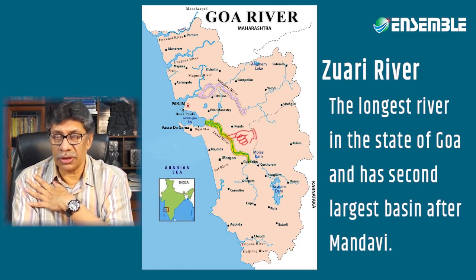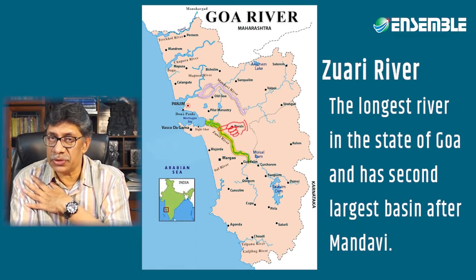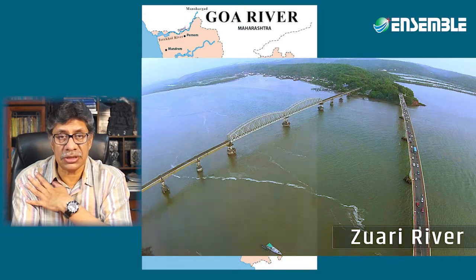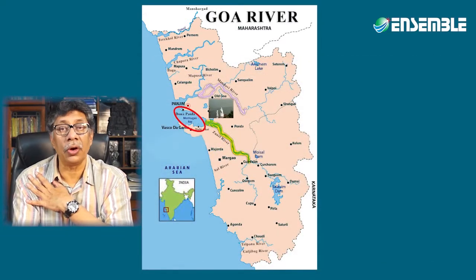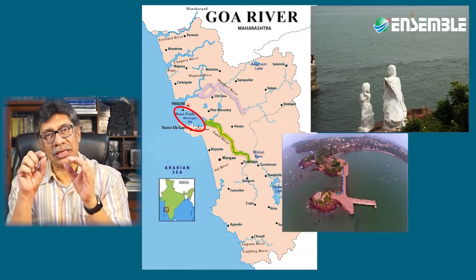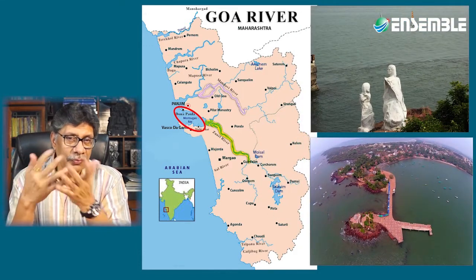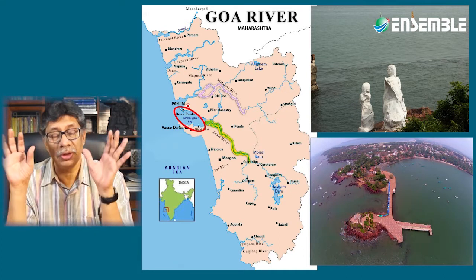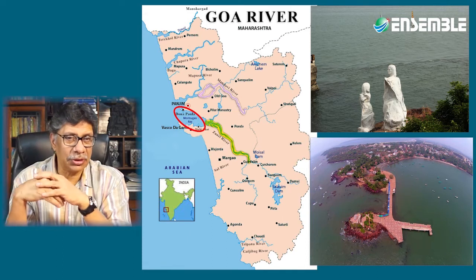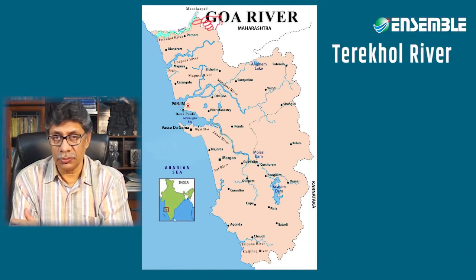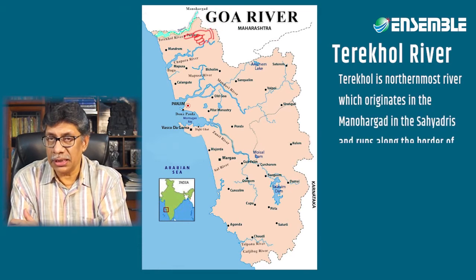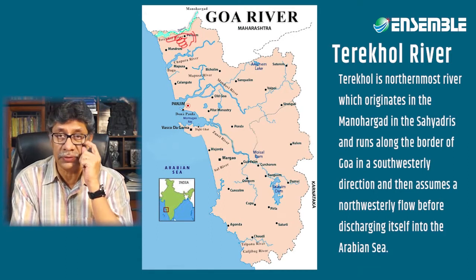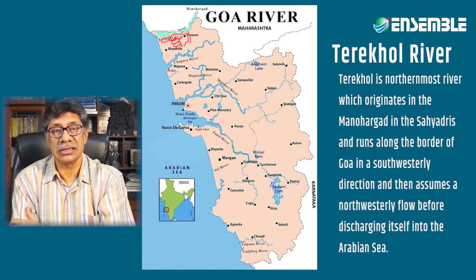The Zuari's source waters lie entirely within the state, with the interstate boundary almost following the water divide. After flowing in a zigzag stretch, it joins the Arabian Sea at the Marmugao-Dona Paula point. The Terekhol is the northernmost river, originating in Manuhargarh in the Sahyadris, running along the border of Goa in a south-westerly direction and then assuming a north-westerly flow before discharging into the Arabian Sea.